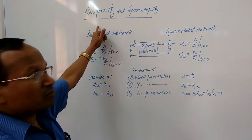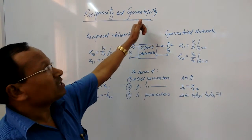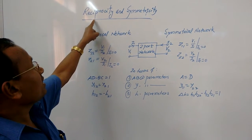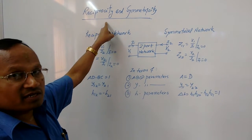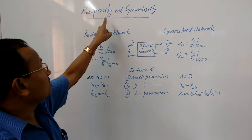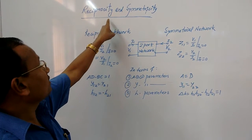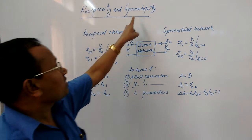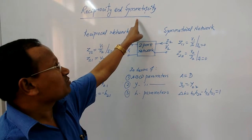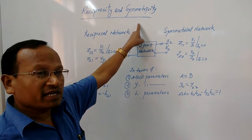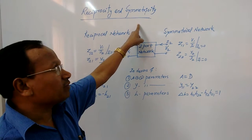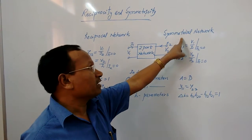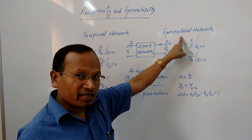Reciprocity is a property, and symmetricity is a property. If the reciprocity property is observed and is true, then that network is a reciprocal network. Similarly, if the symmetricity property exists and is valid in any network, then we call that network a symmetrical network.